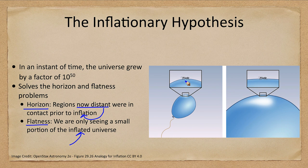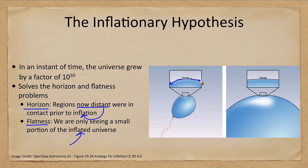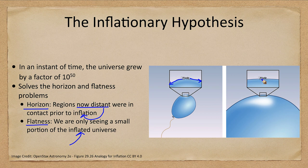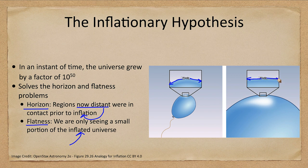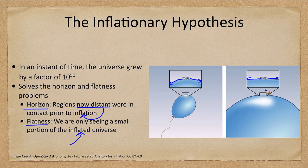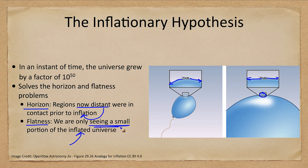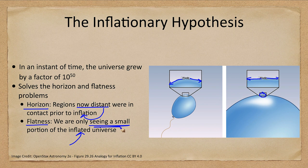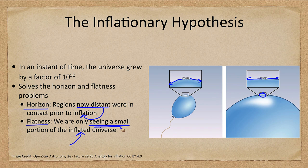With the flatness problem, we are only seeing a small portion of the inflated universe. We use the example of the ant on the balloon here. When the balloon is not blown up very much, the ant can see curvature around either side. However, when the ant is on a much more inflated balloon, then everything looks flat. And if you could imagine this balloon being inflated 10 to the 50 times more, the ant would only be seeing a very tiny portion of the entire universe. We are not seeing the whole universe. Therefore, when we look out into space, we're only seeing that tiny portion around us. That is our part of the universe.